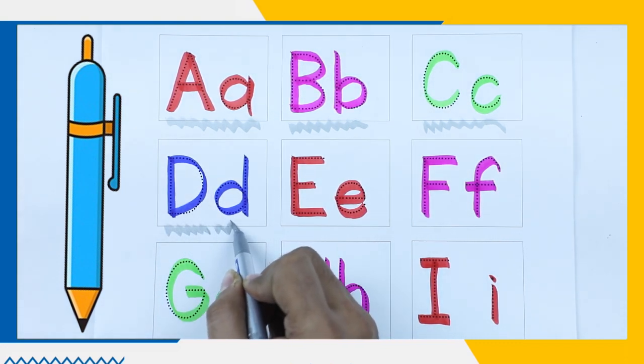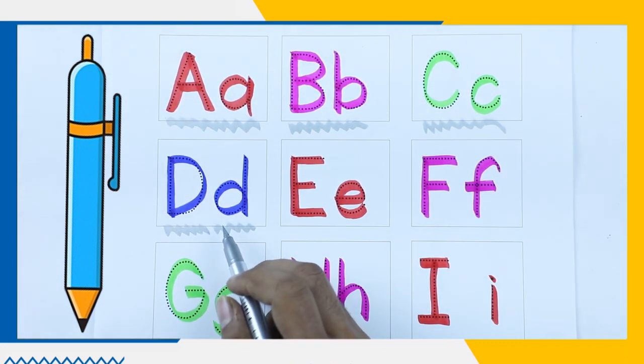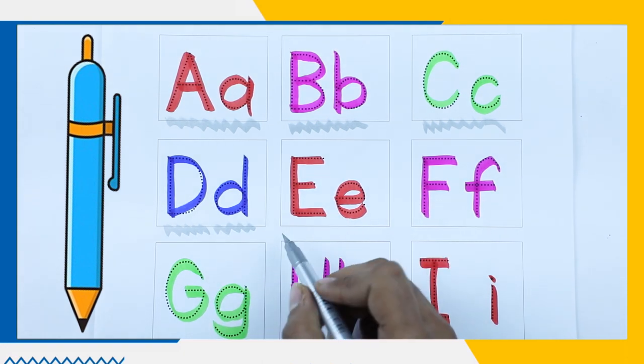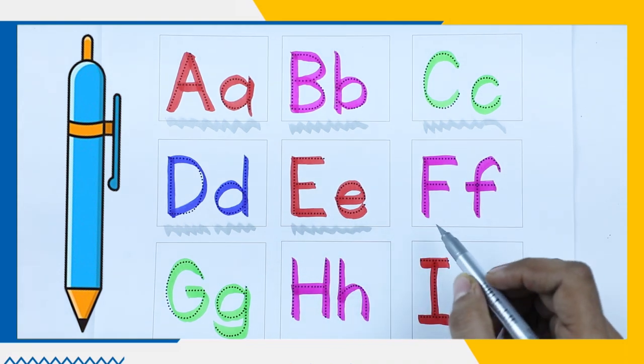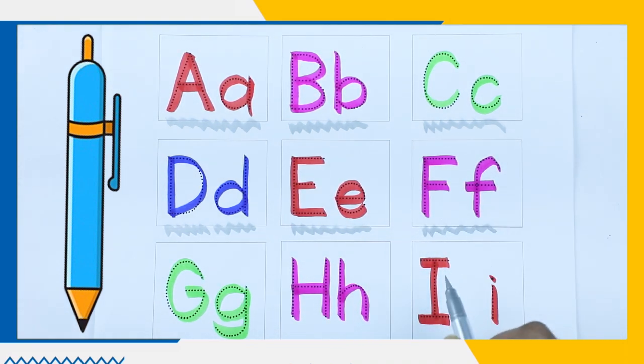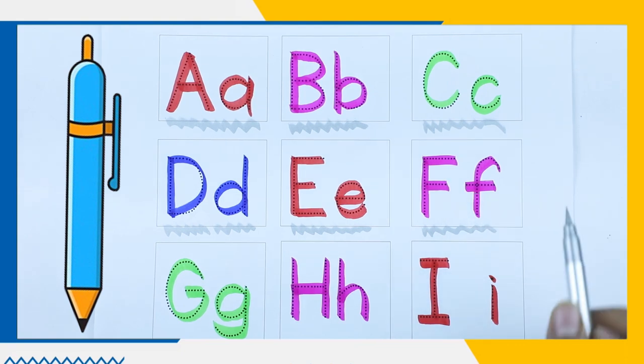D, capital D, small d. It's blue color, D for dog. E, E for elephant with red color. F, F for fish with pink color.